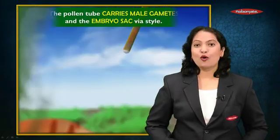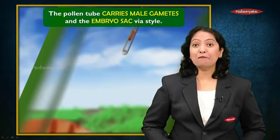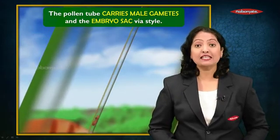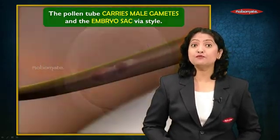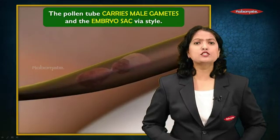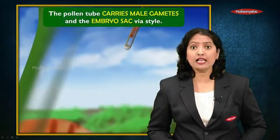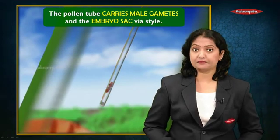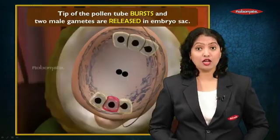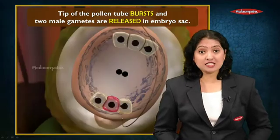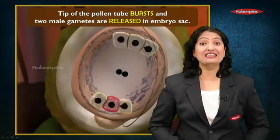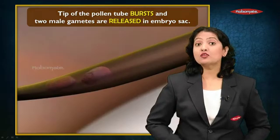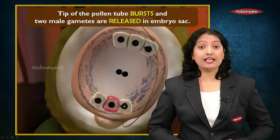The pollen tube carries these male gametes till the embryo sac via the style. The pollen tube keeps growing in length — it dissolves the tissues of the style and reaches till the embryo sac. The tip of the pollen tube then bursts near the embryo sac, and the two male gametes are released into the embryo sac.